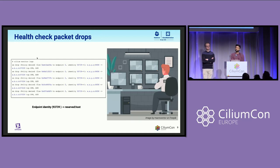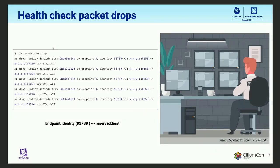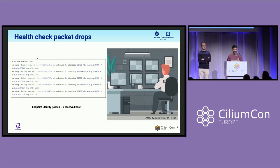The first thing we do with Cilium generally whenever there is a connectivity issue is we do Cilium Monitor logs. Cilium Monitor logs is like looking at real-time CCTV camera footage into your Kubernetes clusters — you could also use Hubble for a similar use case. When we started taking a closer look at the Cilium Monitor drop logs, we noticed packet drops for traffic going from an identity called 93739 to identity number one. Identity one is a reserved host identity, and 93739 is just one of our endpoints. These packets look like SYN-ACK packets.